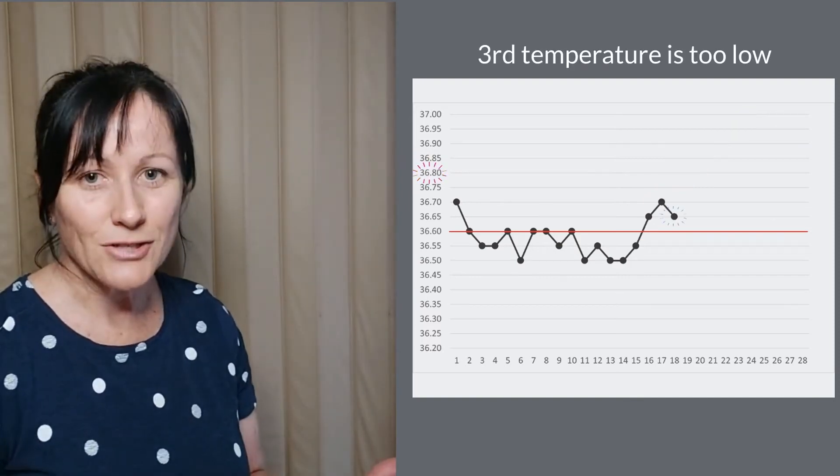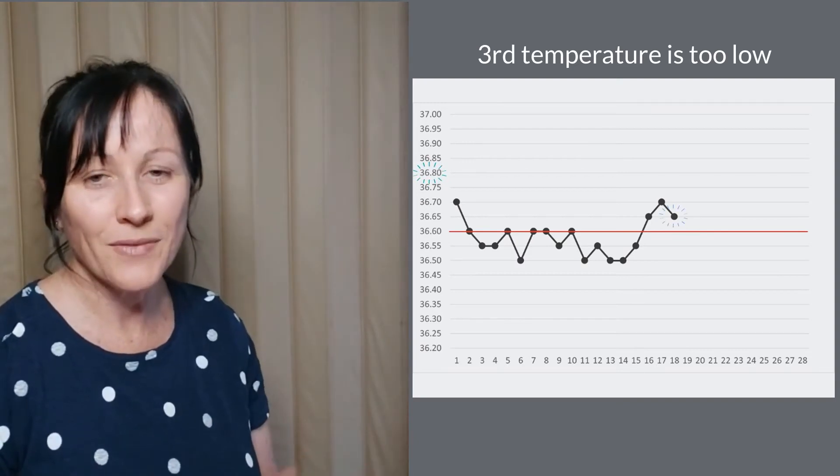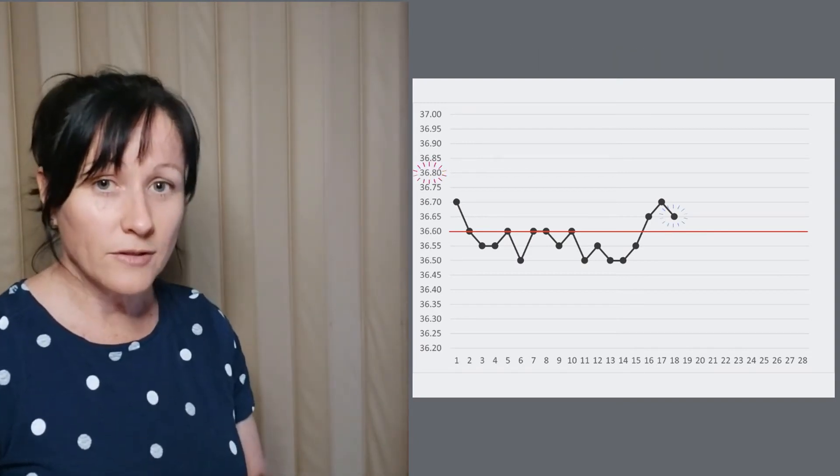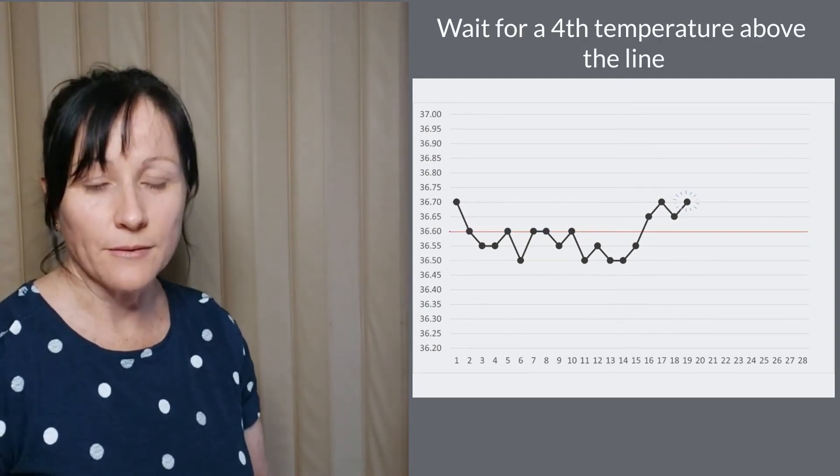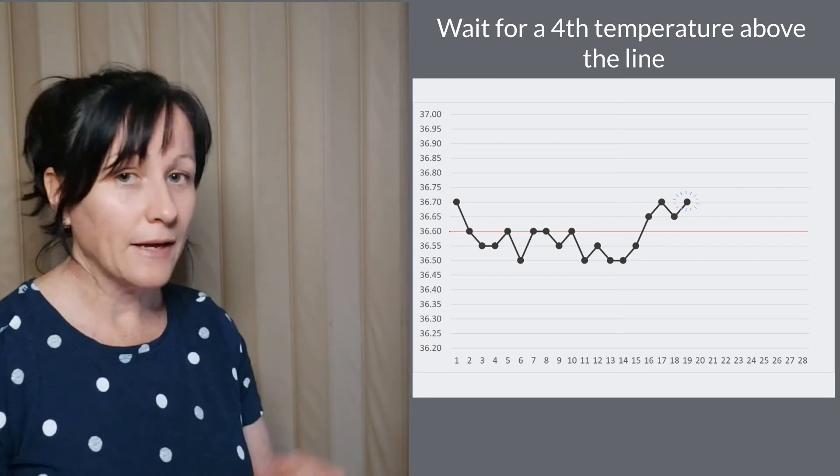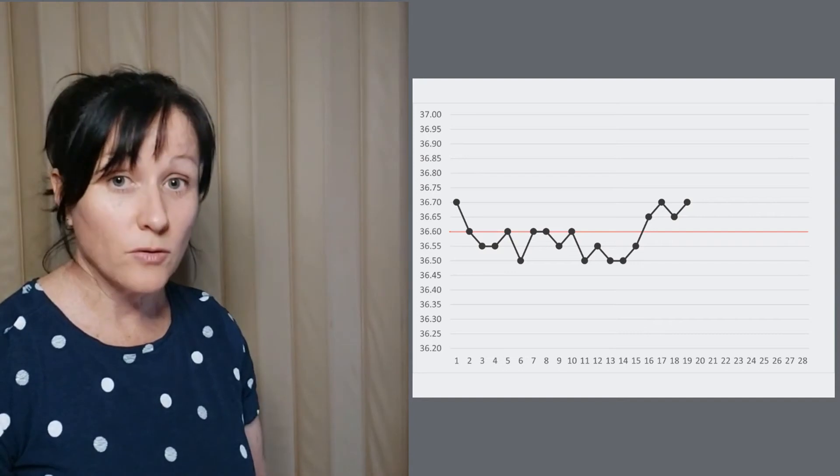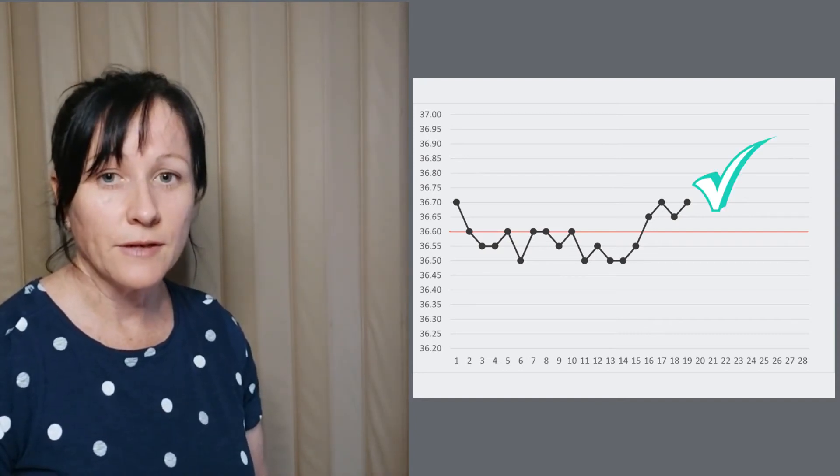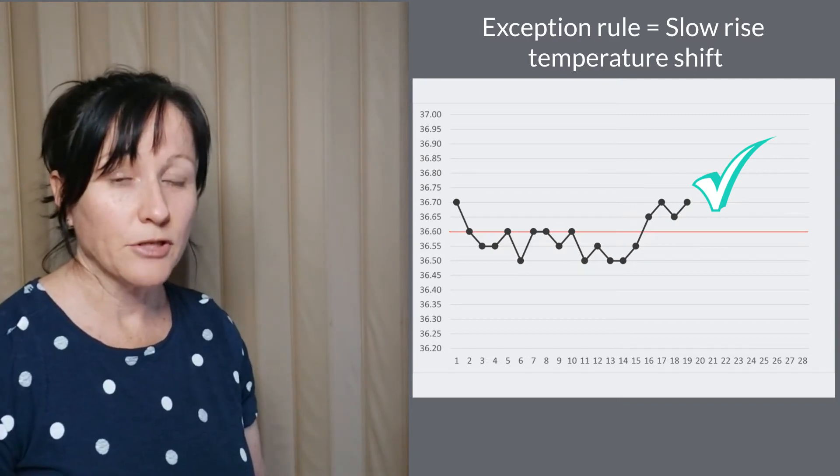But what if it doesn't reach that value? What if this third temperature isn't high enough? Well, that's okay. Leave your cover line where it is and then wait for a fourth temperature. If the fourth temperature is above the line, it doesn't matter what value it reaches, it just needs to be above the line. This is also a valid temperature shift. This is an exception rule known as a slow rise temperature shift.